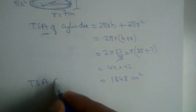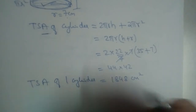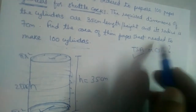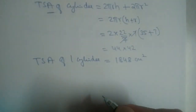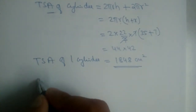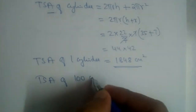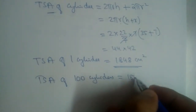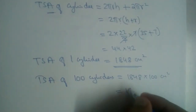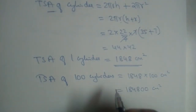This is the total surface area of one cylinder. But we are manufacturing 100 cylinders. So the TSA of 100 cylinders = 1848 × 100 = 184800 cm².